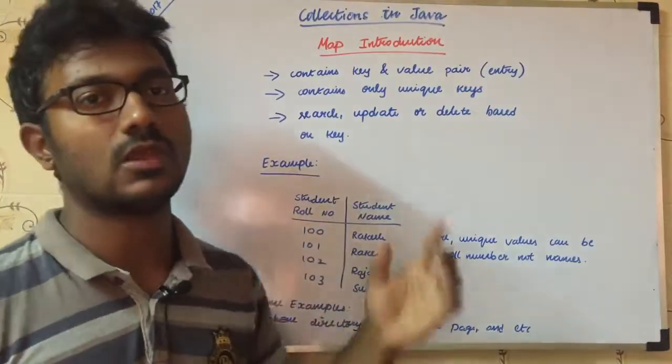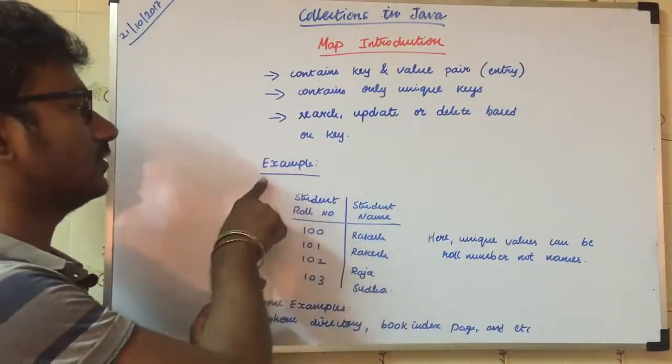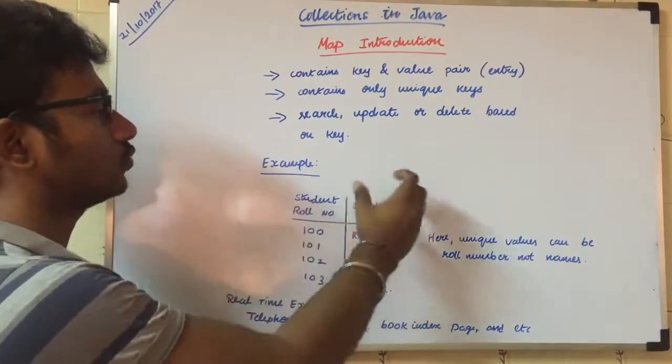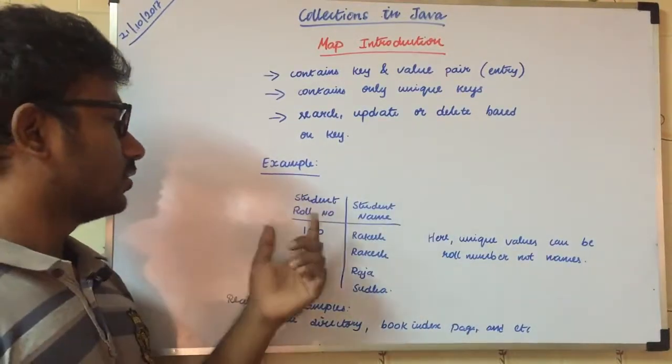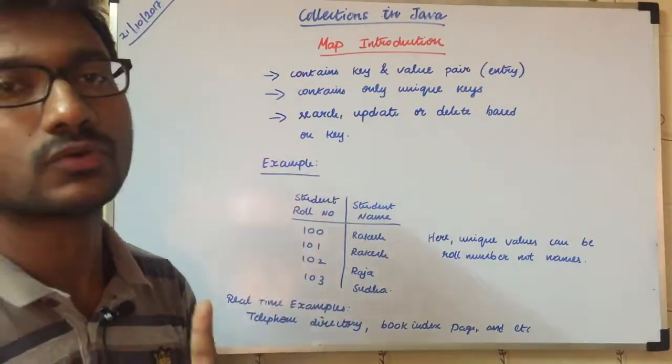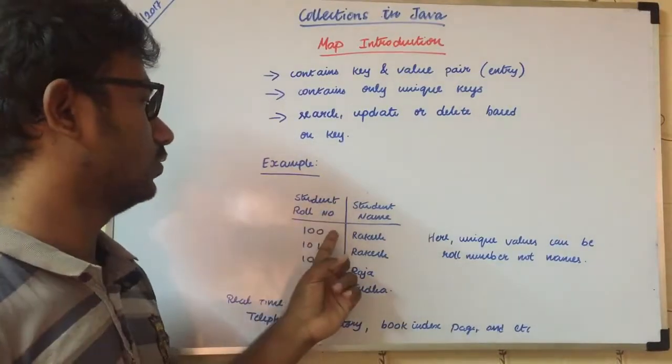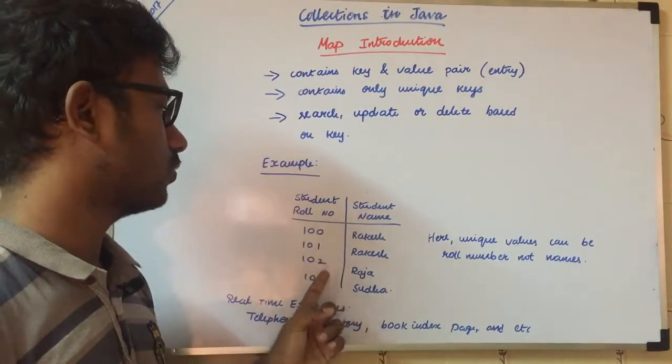Using this key, we can do instant changes. So here's an example: student roll number and student name. These are unique keys. A student has a unique roll number. Multiple roll numbers, each is unique. For example: 100, 101, 102, 103.